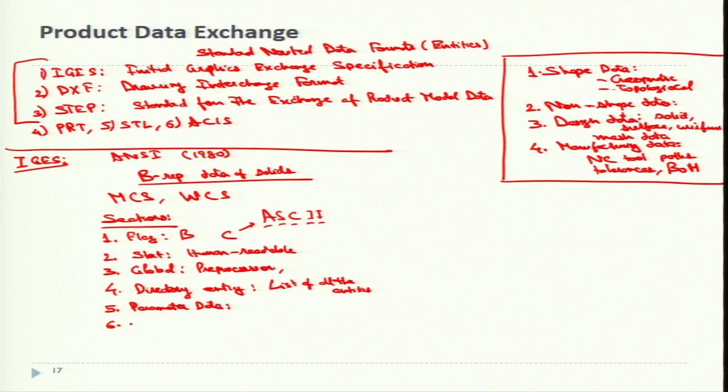There are different characters which are also keeping a record of the parameter data. Next, we terminate the format here and we call it the terminate section. In the terminate section, it contains a single record which specifies the number of records in each of the four preceding sections for checking purposes only. These four sections are major. Flag is optional. This is only the end. These are the details.